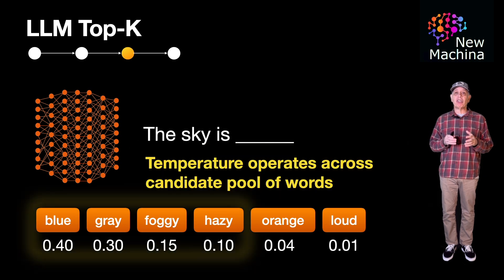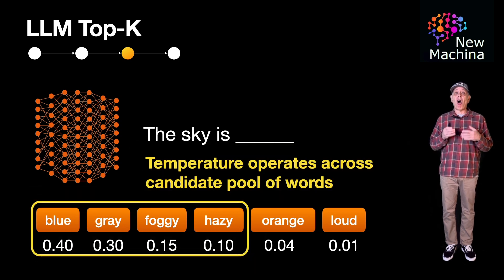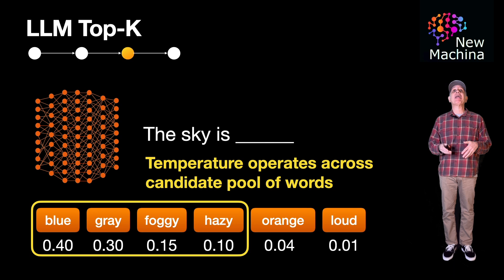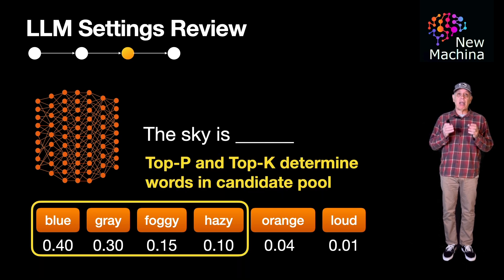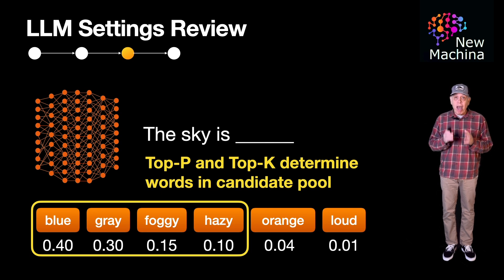Well, in summary, temperature scales the probabilities of all possible words that are in the candidate pool. Higher temperatures generate more random or creative results from the list of words in the candidate pool. Lower temperatures generate more consistent or deterministic results from the list of words in the candidate pool. In contrast, Top-P and Top-K modify the available list of words that are in the candidate pool. These words in the candidate pool are the only ones from which the next word can be sampled.